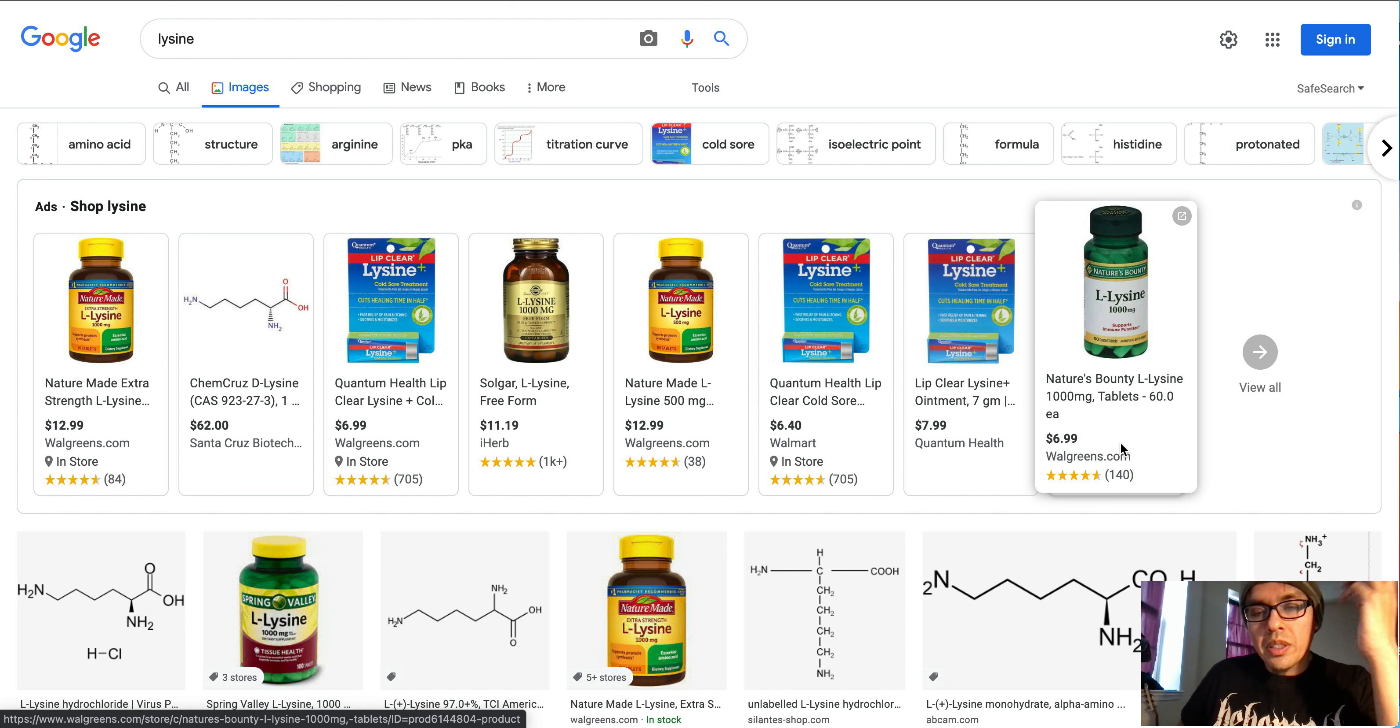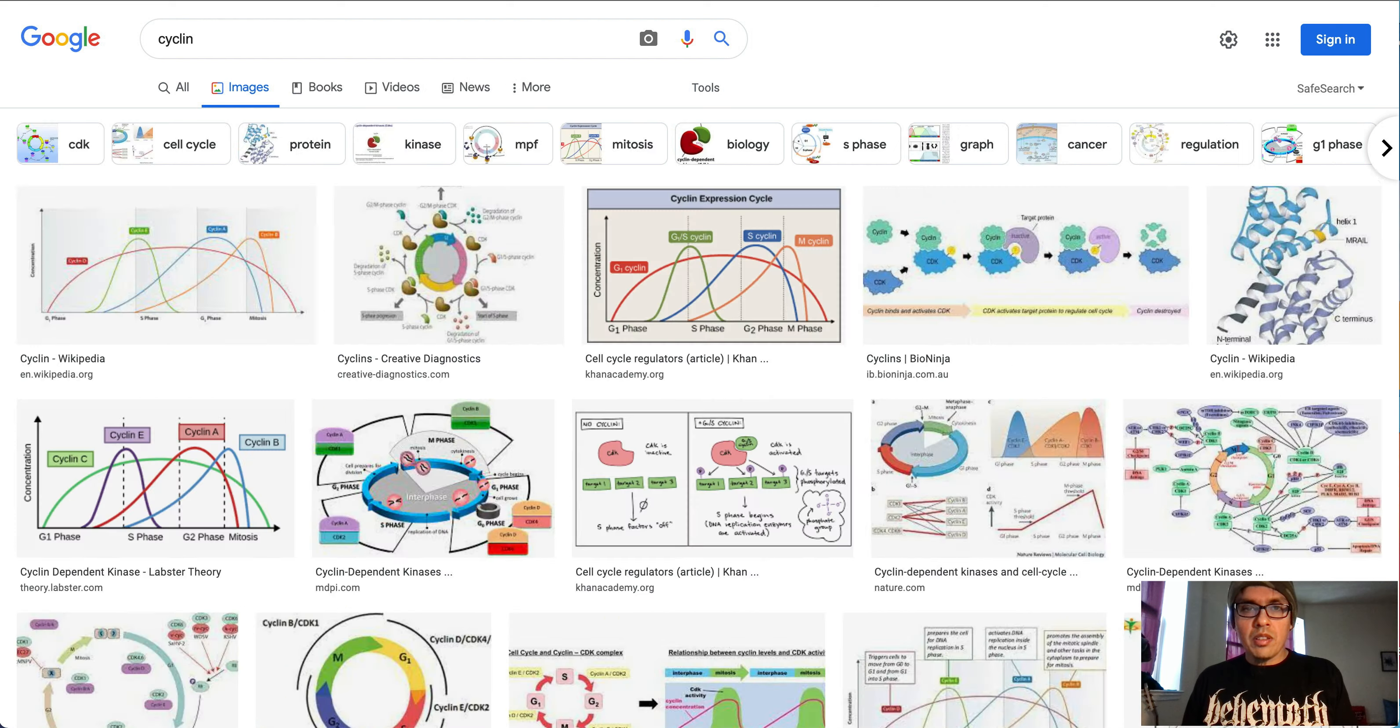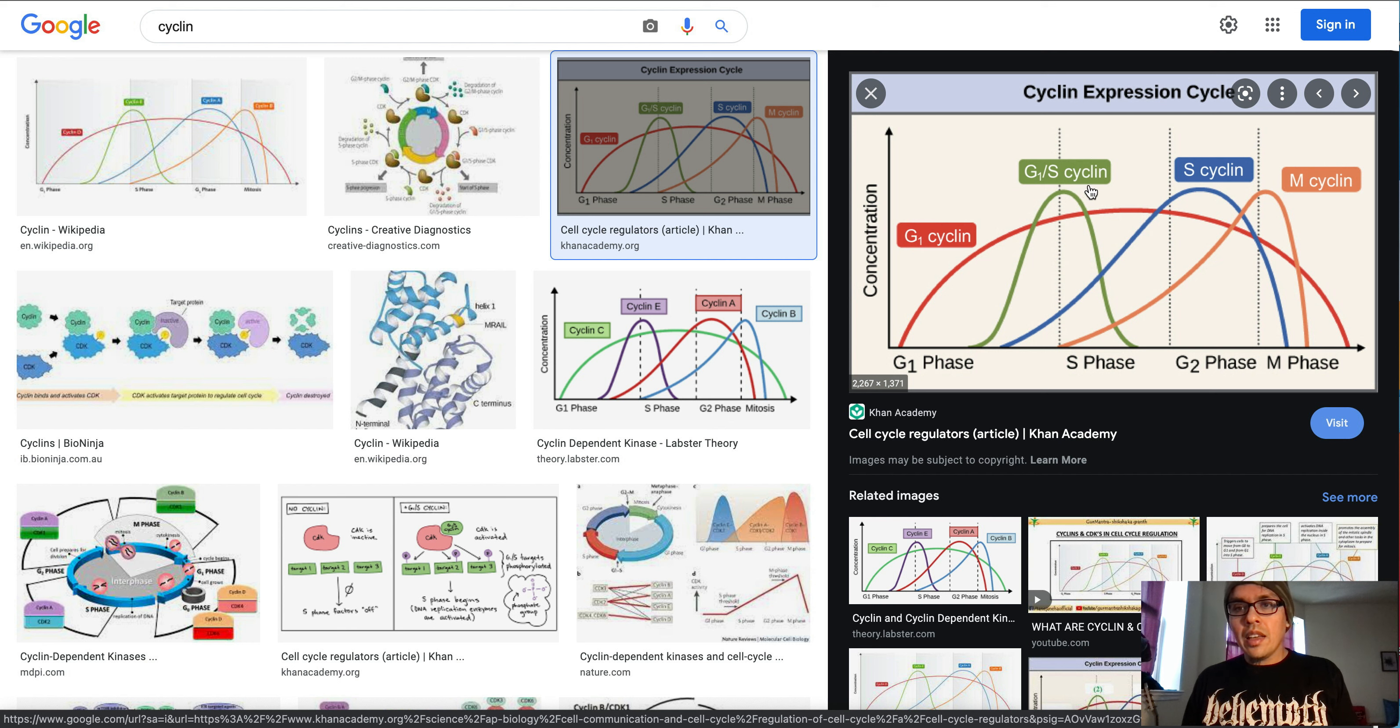At some point, the cyclin dependent kinase protein, which is always present but is activated by the cyclin molecules of different variety—A, B, D, E, etc.—but the issue is that the concentration goes up and down, and once these cyclins are no longer of use, because certain cyclins are used during certain parts of the cycle.